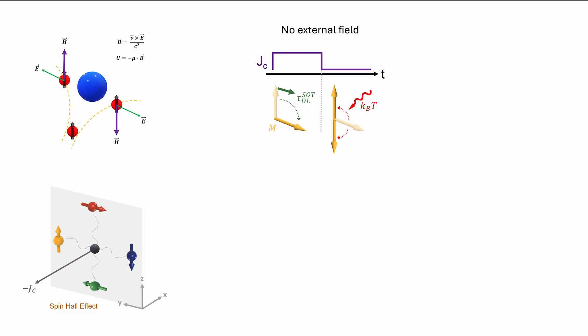However, spin-orbit torque from conventional materials like heavy metals and topological insulators requires a constant external magnetic field to be present, so that the switching can be performed reliably.